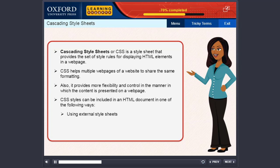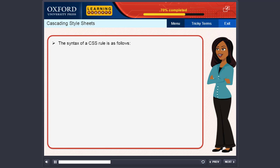CSS styles can be included in an HTML document in one of the following ways: using external style sheets, using embedded style sheets, using inline styles. The syntax of a CSS rule is as follows: selector, property 1 colon, property 1 value semicolon, property 2 colon, property 2 value semicolon. Properties and their values are separated by colons, while properties and property value pairs are separated by semicolons. All properties and their values are enclosed by curly brackets.